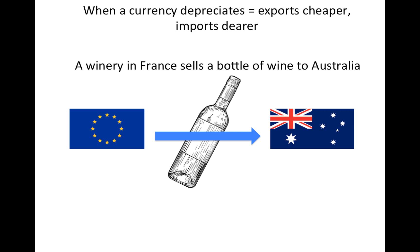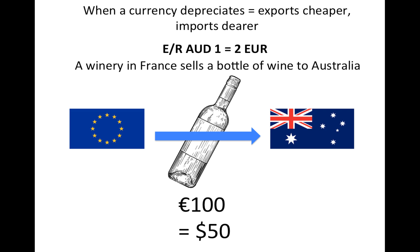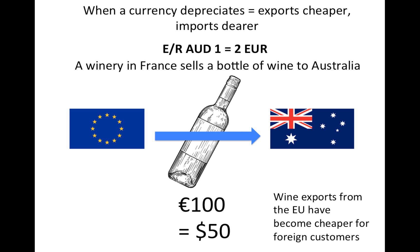Now let's assume that the exchange rate of the euro depreciates, and that for each Australian dollar you get two euros. This means that exactly the same bottle that was priced at 100 euros now costs 50 dollars for Australian customers. When the currency depreciates, the wine exports from France to Australia are becoming cheaper for Australian consumers.